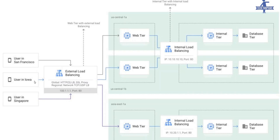If the user in Iowa tries to hit the same YouTube URL, the load balancer will detect that this user is from that region and try to serve them from US Central 1B. Similarly, if the user in Singapore hits the YouTube URL, it will detect that this is from the Asia region and instead of US Central 1, it will try to serve from Asia because there will be minimum latency from that region.